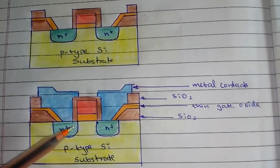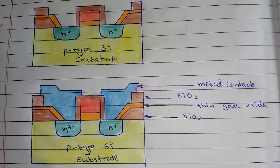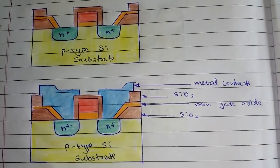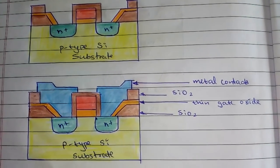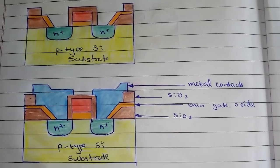The two metal contacts form the drain and source, with the gate in the middle. A small via is made through the SiO2 layer to reach the gate. Below are the n+ regions, and below that is the p-substrate. With this we finish NMOS fabrication.